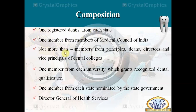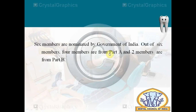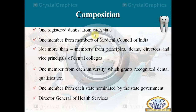One member is selected from each university recognized for dental qualifications — most states have one medical university, so each university sends one elected member to the Dental Council of India. One member is also nominated by each state government, giving 29 members in this category as well. Additionally, there is one Director of General Health Services, and six members nominated by the Government of India — out of the six, four members are from Part A and two from Part B. Part B refers to dentists who were practicing before the Dentist Act came into existence, i.e., before 1949.